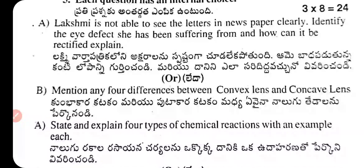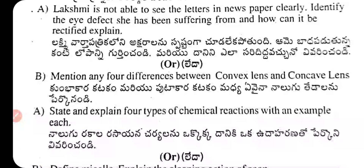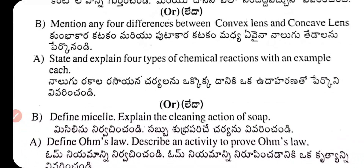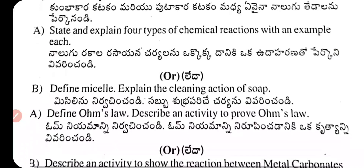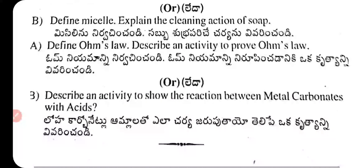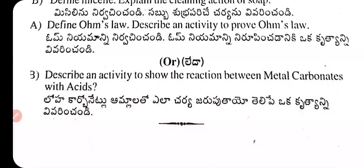Find the power of the prescribed lens. Section 4: Lachmi is not able to see letters in a newspaper clearly — identify the eye defect and explain how it can be rectified. Also: differences between convex and concave lenses, four types of chemical reactions with examples, micelles and cleaning action of soap, Ohm's law with activity, and metal carbonate with acid activity.